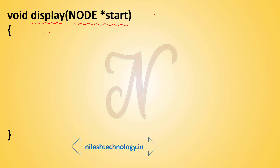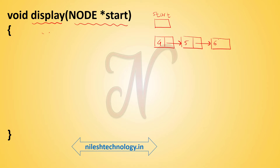Assume this is your linked list — here we draw one linked list. This is your start, and this is the linked list: 4 stores the address of the next, 5 stores the address of the next, 6 stores the address of the next, 7 then null. Assume the addresses are 1000, 1020, 2020, and 2080. Address 1000 is stored in the start variable, so this linked list is passed as a parameter.